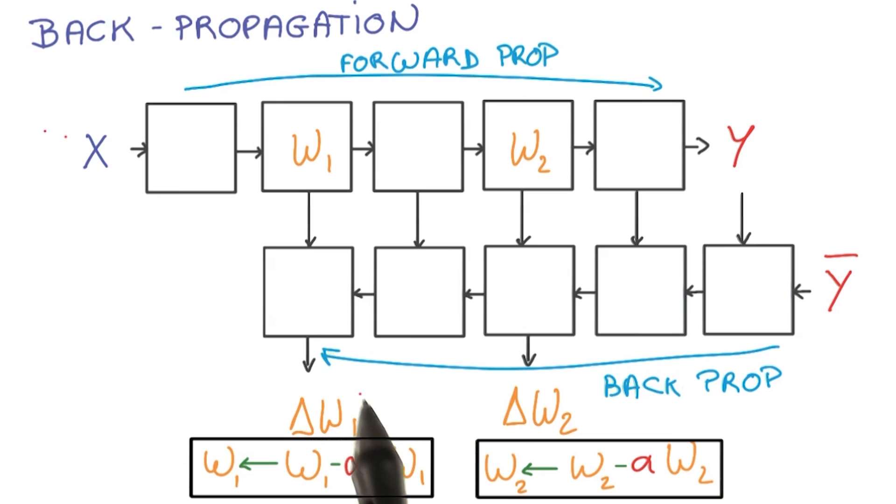And that will give you gradients for each of your weights in your model. Then you're going to apply those gradients with the learning rates to your original weights and update them. And you're going to repeat that all over again many, many times. This is how your entire model gets optimized.